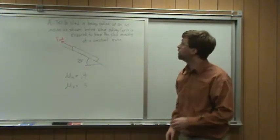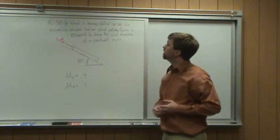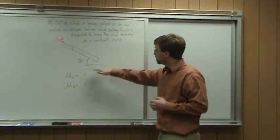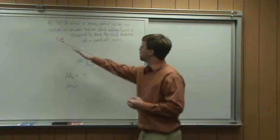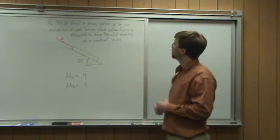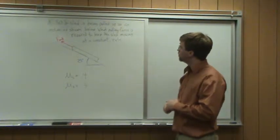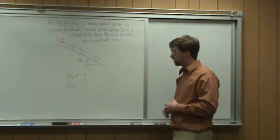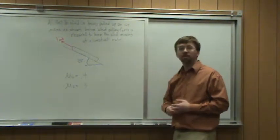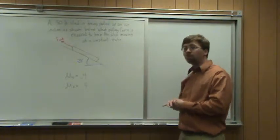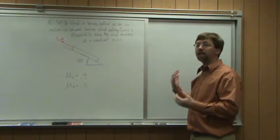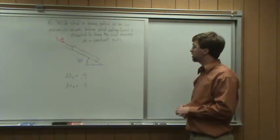Hello. For this problem, we've got a sled with a weight of 30 pounds being pulled up a 25 degree incline with a pulling force that's parallel to the slope. The static coefficient of friction is 0.4, the kinetic coefficient of friction is 0.3. We're asked to determine the pulling force required to keep this sled moving at a constant rate.